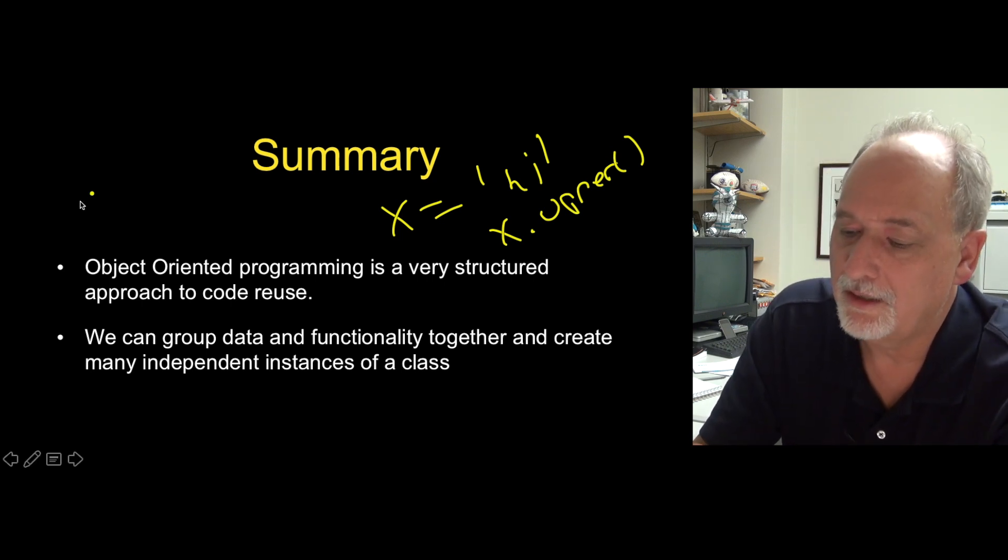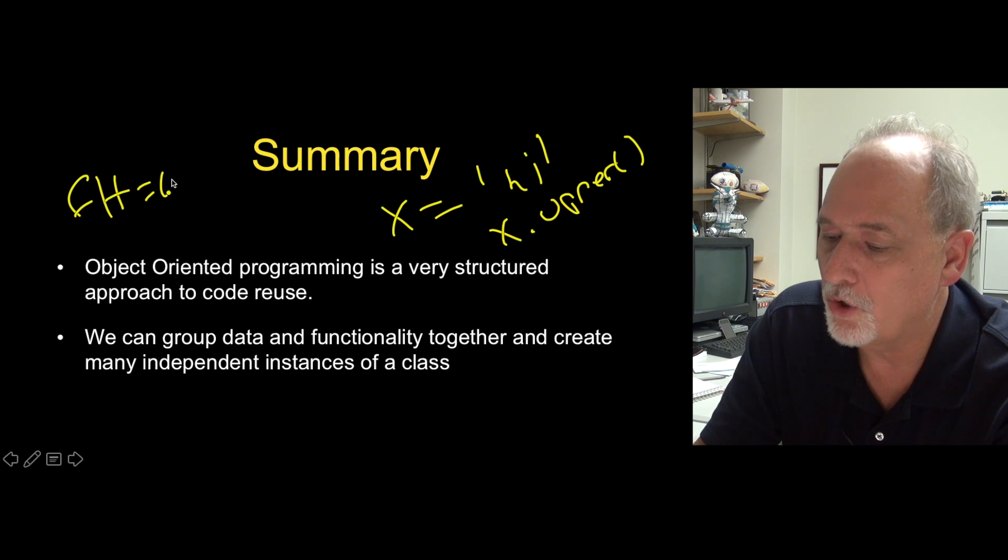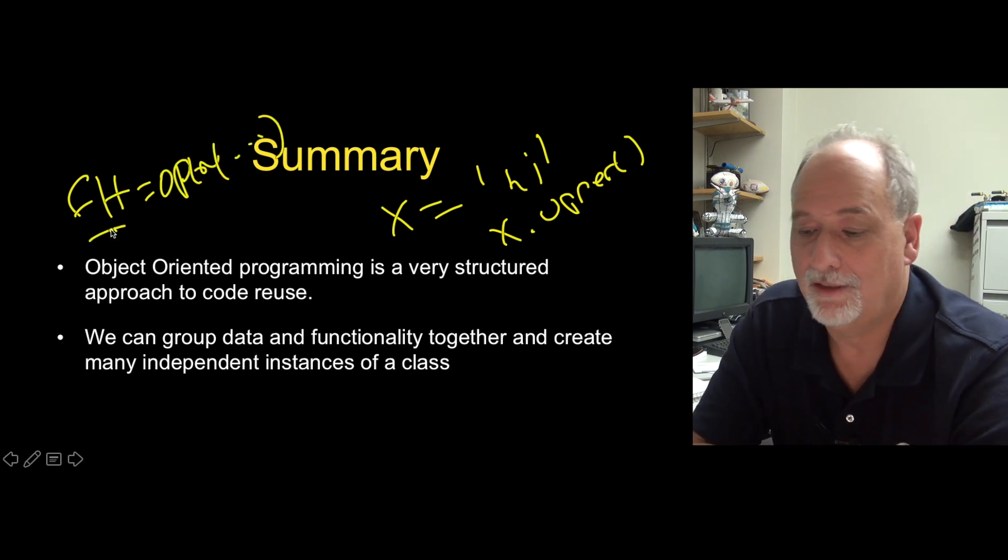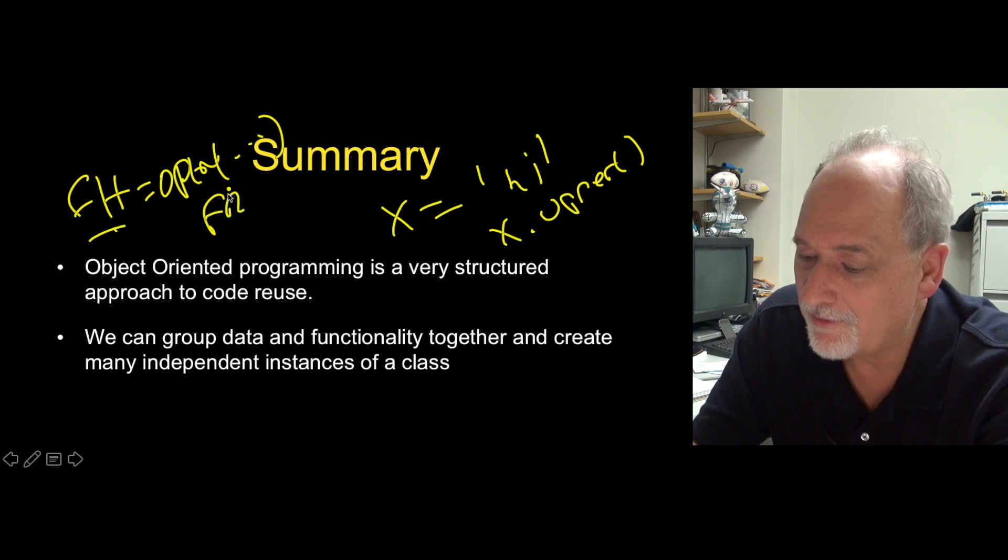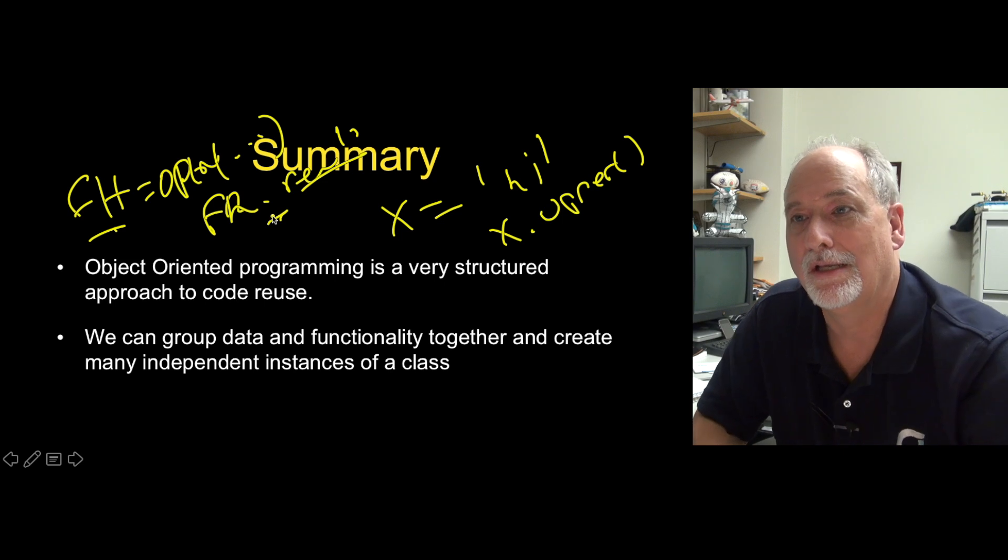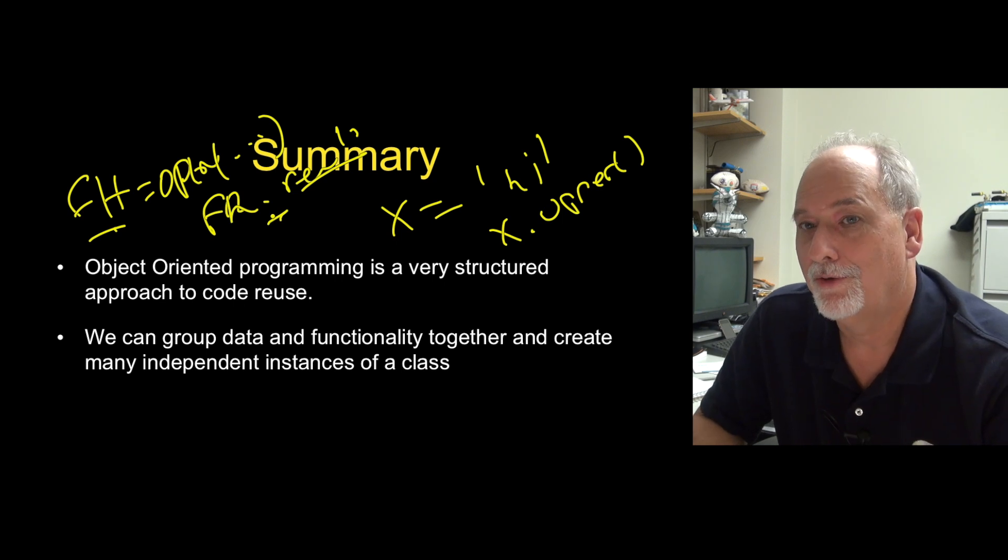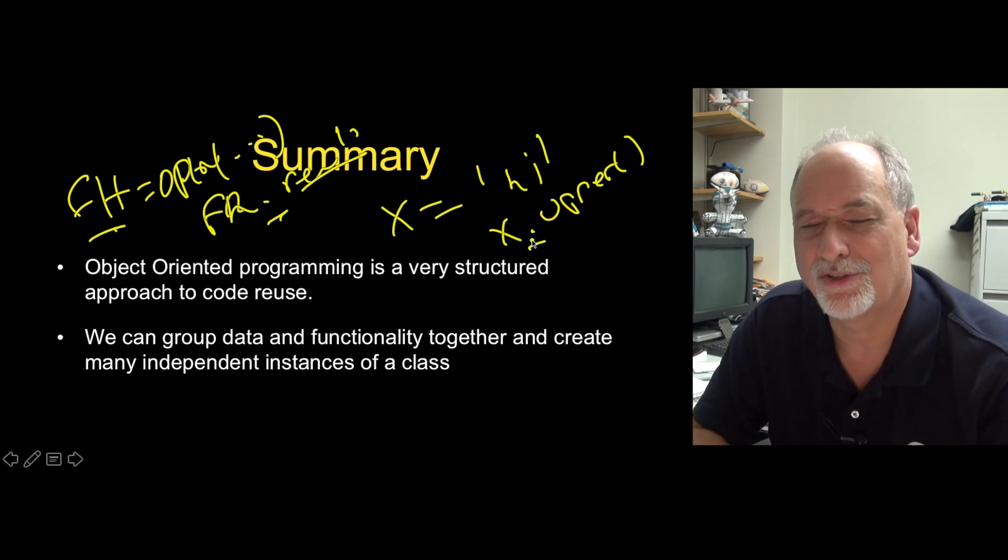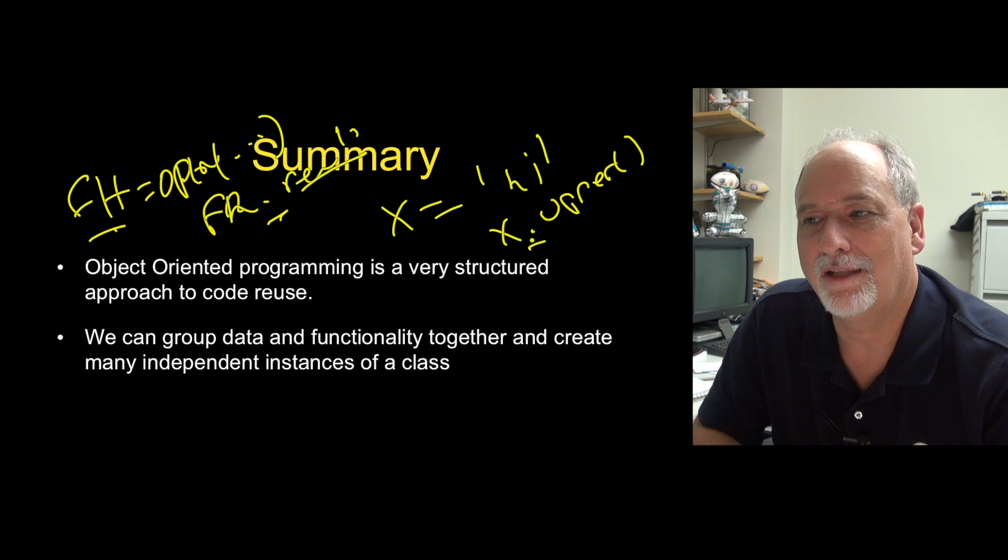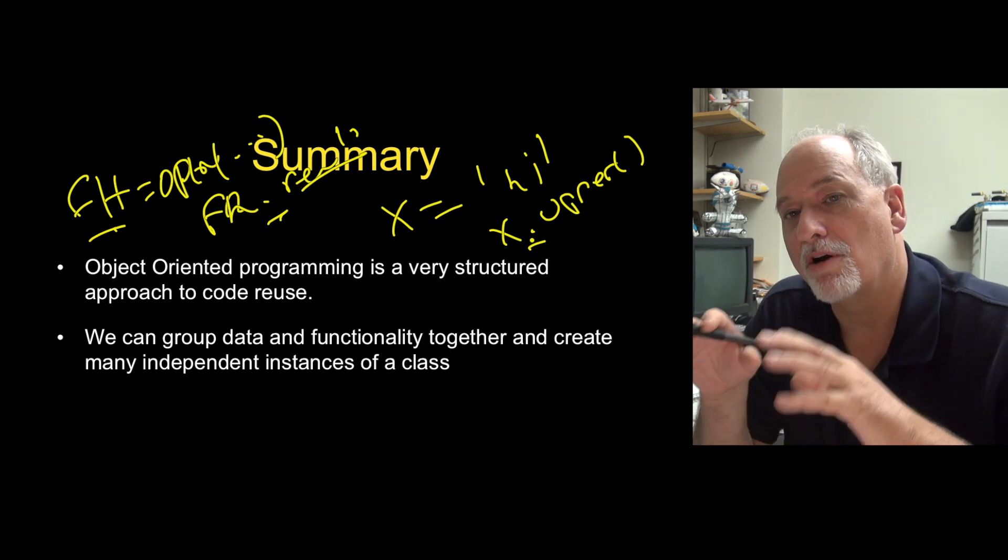When you're doing something like fh equals open, this thing you're getting back, that's an object. And then you do fh.read or whatever. You're calling a method in the dot operator. So you've been using objects all along. I now am just finally explaining to you when I say call the read method, or call the upper method, or what's this little dot and why is that there? So again, it's time for us to understand that. But it will take you a long time before you encounter a problem that's large enough where as part of your solution,